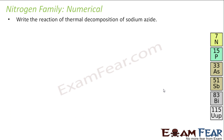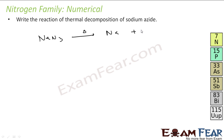Let's look at a numerical example. Find the reaction for the thermal decomposition of Sodium Azide, NaN3. When you heat NaN3, you get Sodium plus 3/2 N2. This is the reaction for the thermal decomposition of Sodium Azide.